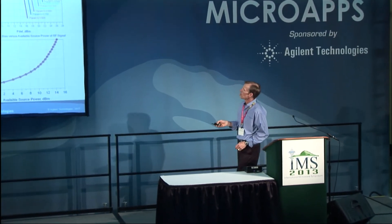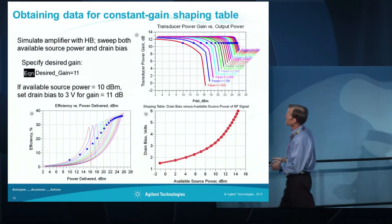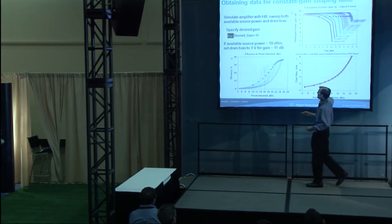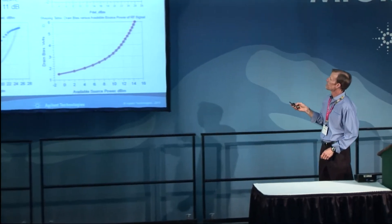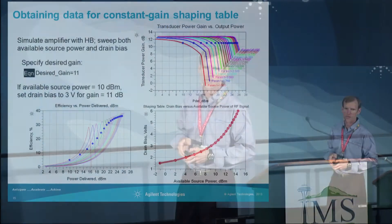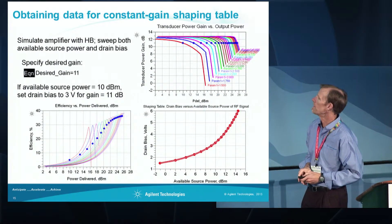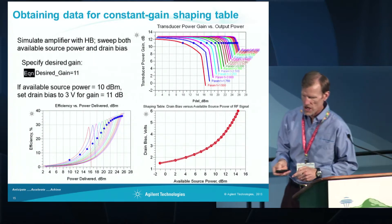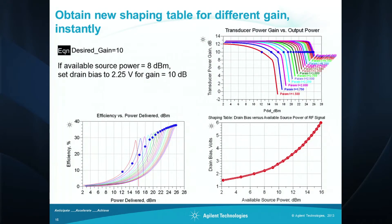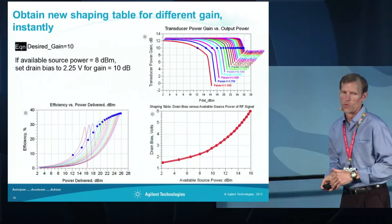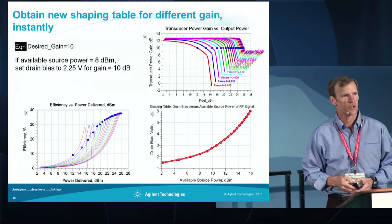This curve shows where these operating points are on the efficiency versus power delivered curve. At 11 dB gain we're only slightly into compression, so we're not operating at that high a level of efficiency. If we change the desired gain to 10 dB, we're further into compression, and the shaping table is updated automatically, giving a slightly higher efficiency versus power delivered. It's easy to create these different shaping tables and run different simulations.